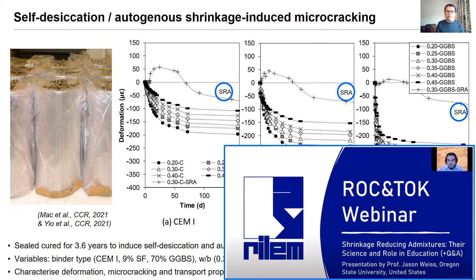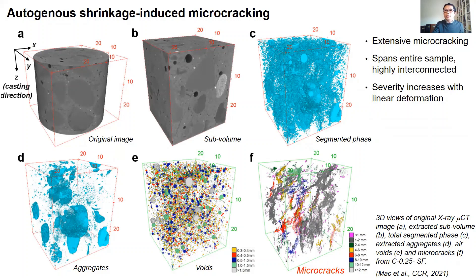Having subjected the samples to self-desiccation, we then characterized the microcracking that formed in these systems. Here is an example using X-ray microCT to obtain a three-dimensional image of the sample, which we then process to extract the aggregate particles, the voids, and finally the microcracks. What we observe is that self-desiccation and autogenous shrinkage causes microcracking to occur pretty much all over the place, spanning the entire sample and forming highly interconnected structures. The severity of microcracking increases with increase in the magnitude of shrinkage.